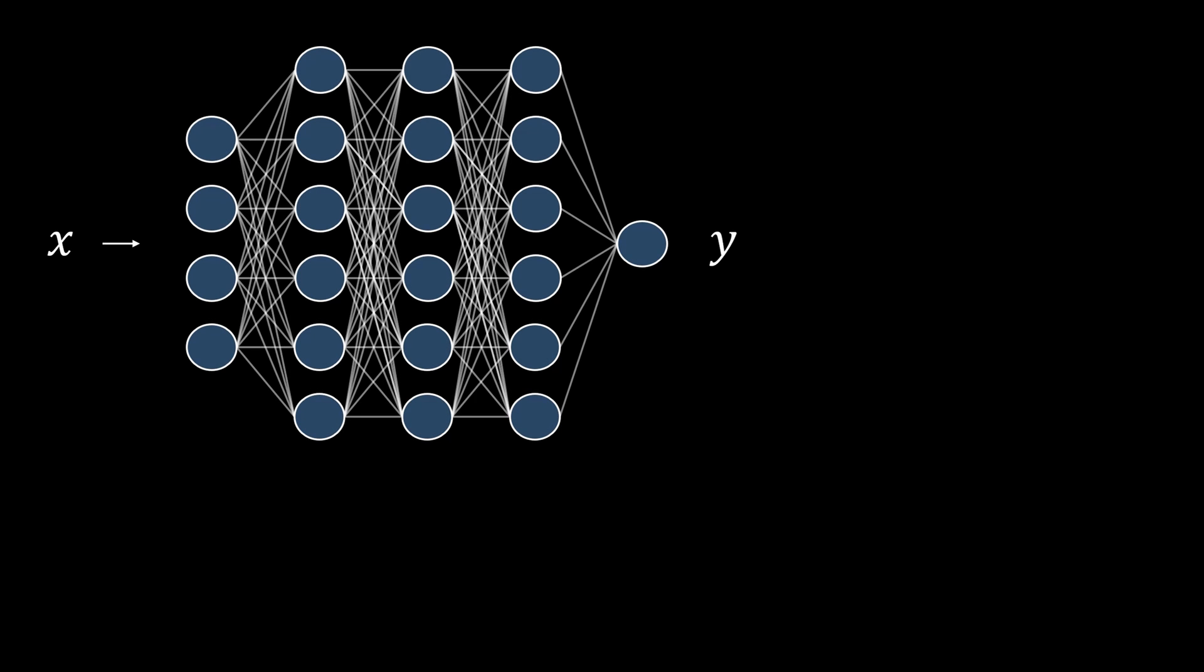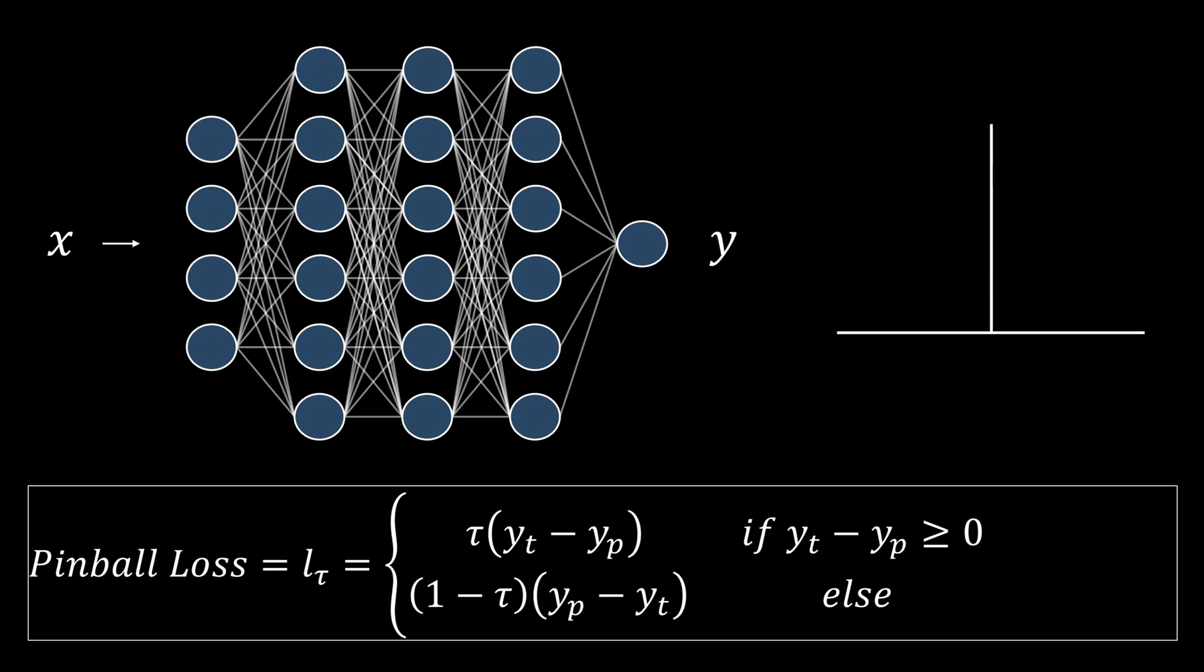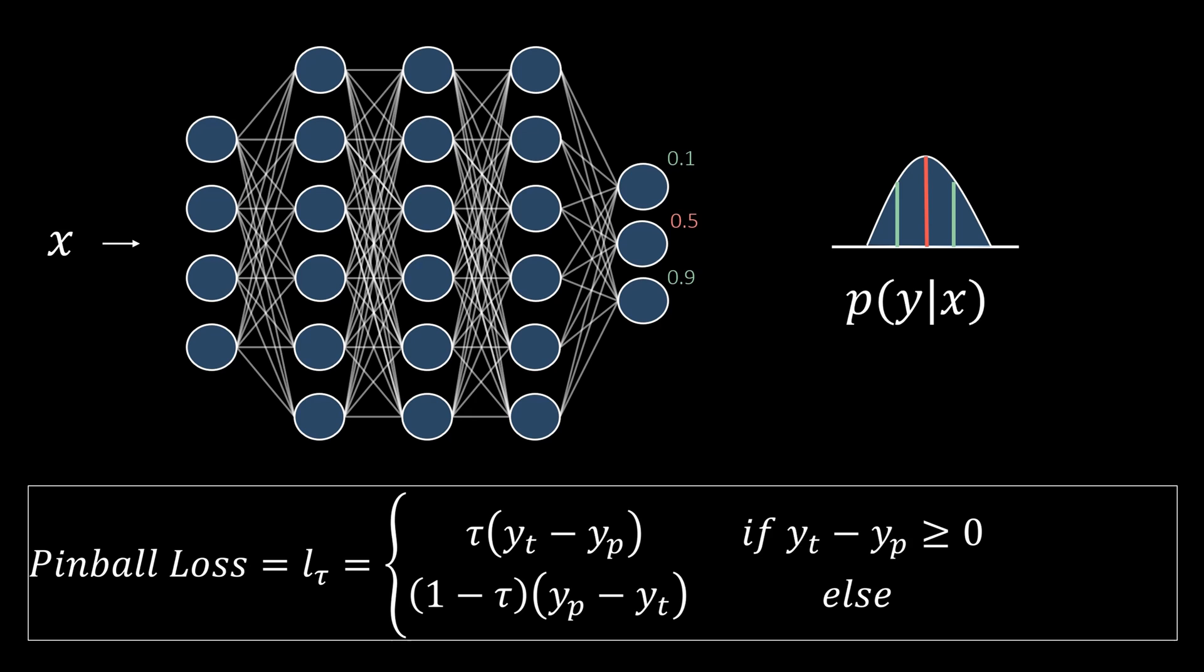To estimate quantiles, we can use the pinball loss function. The name of this loss function comes from its shape, which reminds of the trajectory of a pinball. This loss function has a parameter called tau that allows us to estimate a specific quantile. The loss is zero if exactly the quantile is predicted, and its increase is asymmetric around this point to force the model to fulfill the quantile conditions. When we set tau to 0.5, it corresponds to estimating the median of the distribution. In fact, the loss function is then nothing else but the mean absolute error. In the following, we will choose 10%, 50%, and 90%. We can make our model predict three outputs for this. The intuition behind this loss is to penalize over- or under-predicting for each of the predicted quantiles. The true label is denoted with yt here, and the prediction of one of the three model outputs is yp.